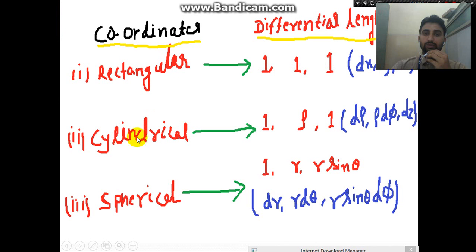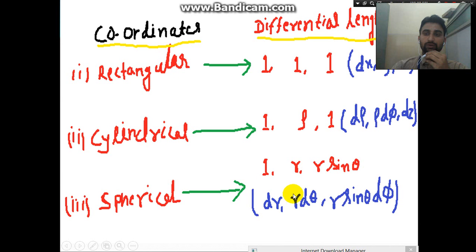For the cylindrical coordinate system, the multiplication factors are 1, rho, and 1. So the first coordinate rho becomes d-rho, the second coordinate phi becomes rho d-phi (multiplication factor is rho), and the third coordinate z becomes dz (multiplication factor is 1). For the spherical coordinate system with coordinates r, theta, and phi, the multiplication factors are 1, r, and r·sin(θ). So r becomes dr, theta becomes r·dθ, and phi becomes r·sin(θ)·dφ.